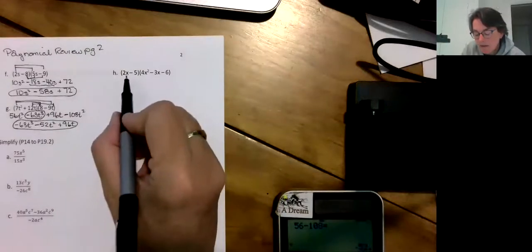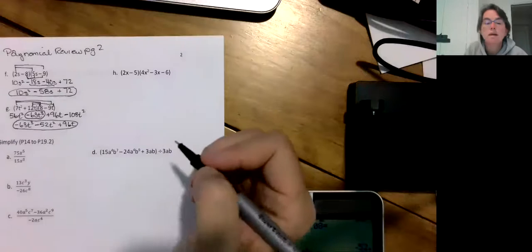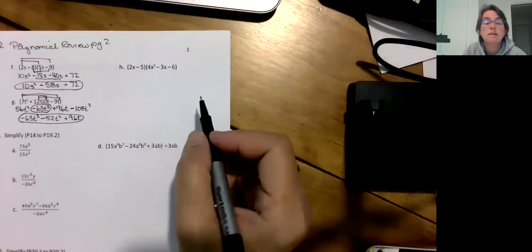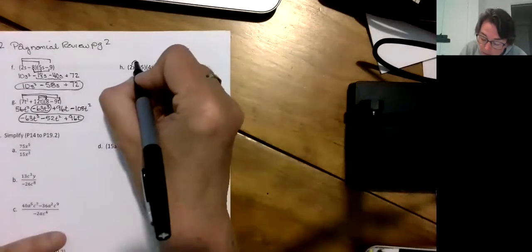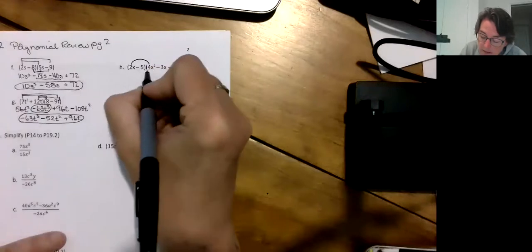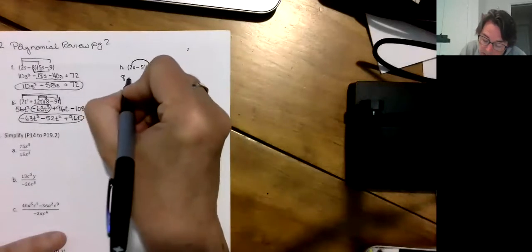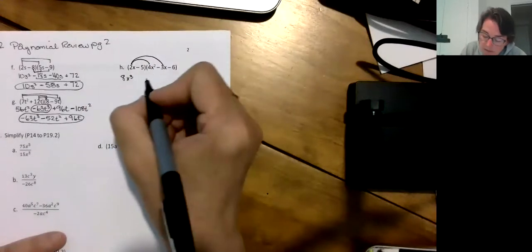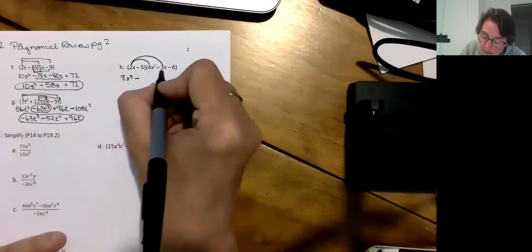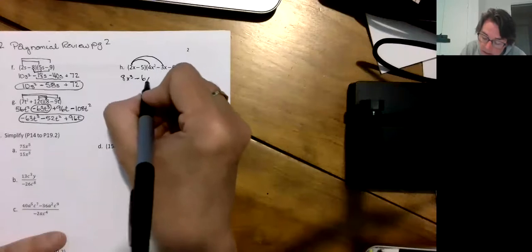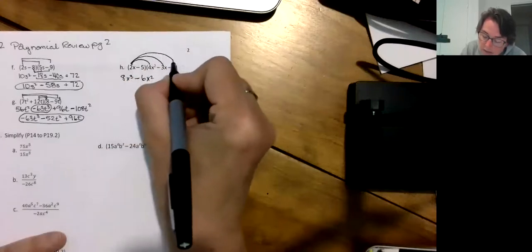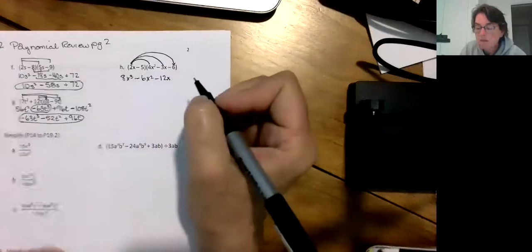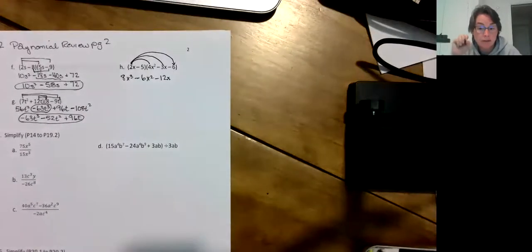This one here is a binomial times a polynomial. I'm going to just use a version of FOIL. You could do this vertically but basically I'm running out of room so we'll do it this way. 2x times 4x squared is going to be 8x cubed, so I'm distributing, so there's my first. And then I go to this one, 2x times minus 2x is minus 4x squared, and I have to distribute a third time. 2x times minus 6 is minus 12x.